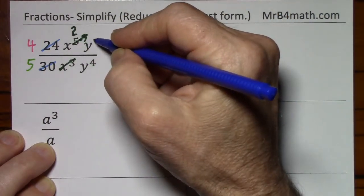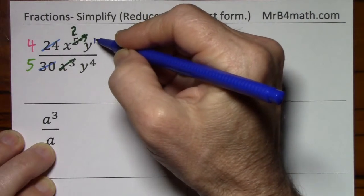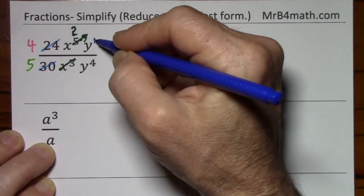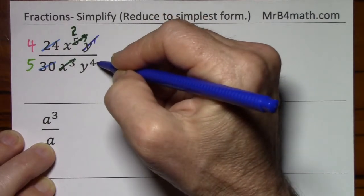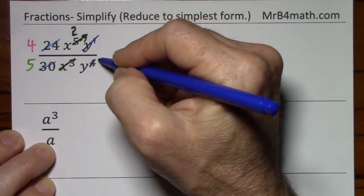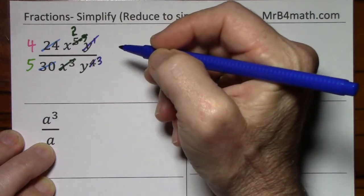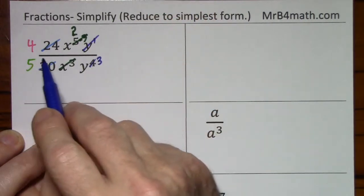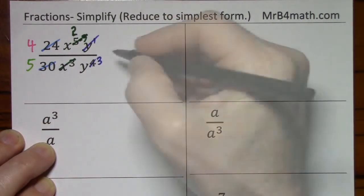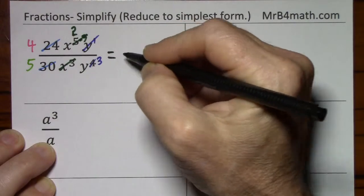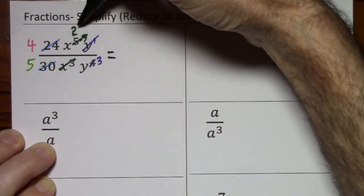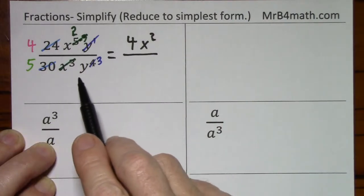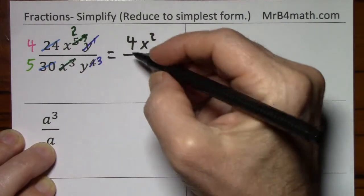This is y to the first power compared to y to the fourth power. I'm going to cross this one out. Subtract 1. I'm left with 3. I don't have to put a 1 here because I have other things in the numerator. So, what's left standing? We have 4x squared in the numerator, and we have 5y to the third in the denominator.